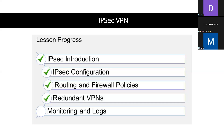Question two: Which setting determines whether a tunnel is used as primary or backup? Is it A, routing, or B, firewall policies? The answer is A — routing.